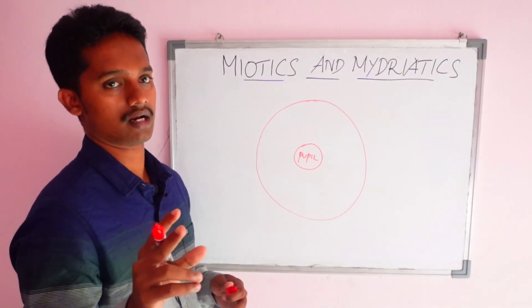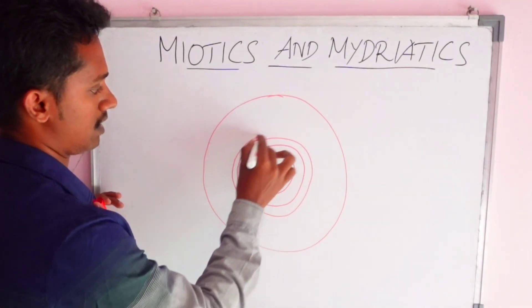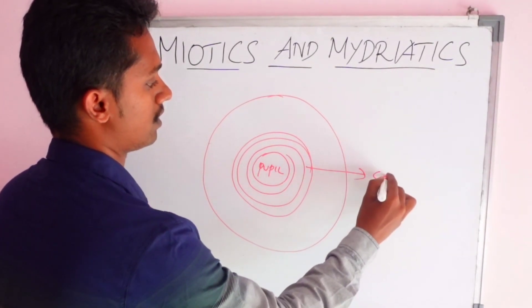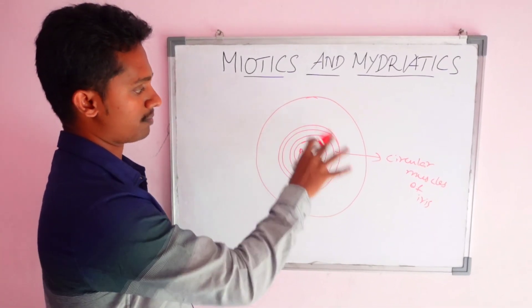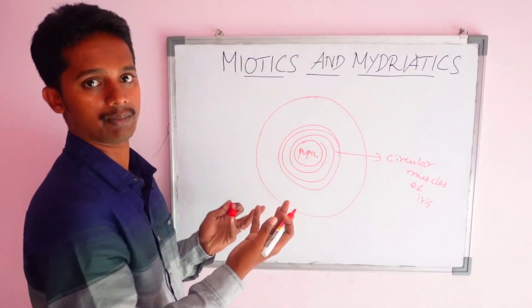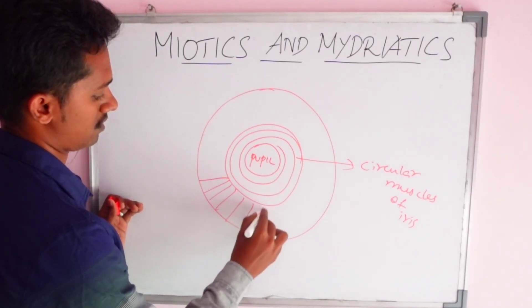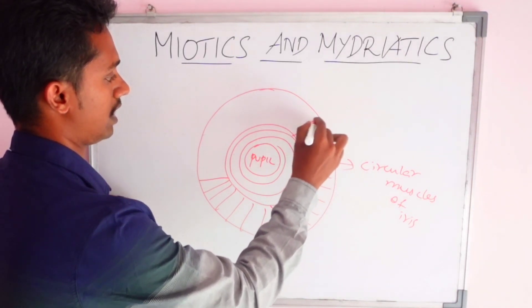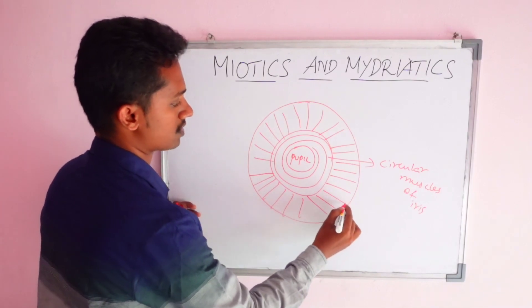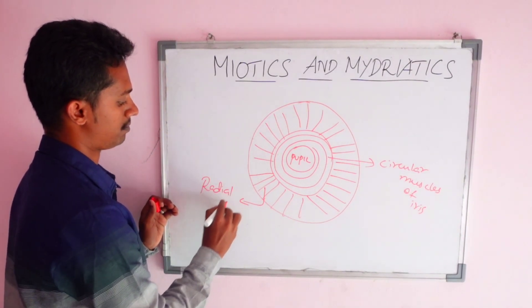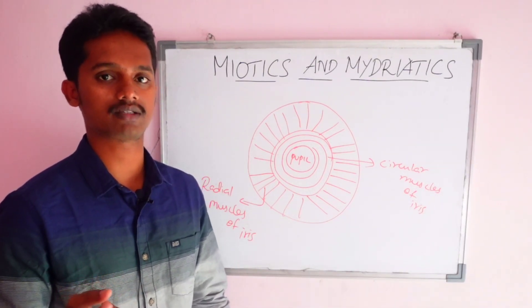In the iris, there are two smooth muscles. One smooth muscle is the circular muscle, which circles around the iris. This is called the circular muscle of the iris. The other is the radial muscle, which runs radially in the iris. One muscle is circular and one muscle is radial.